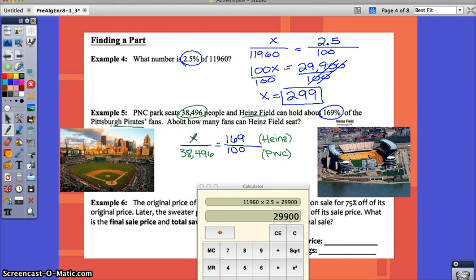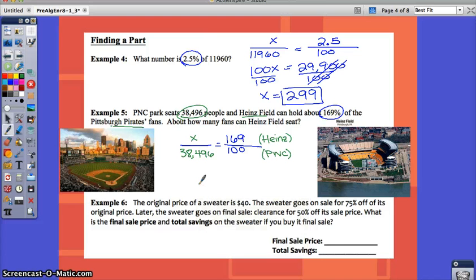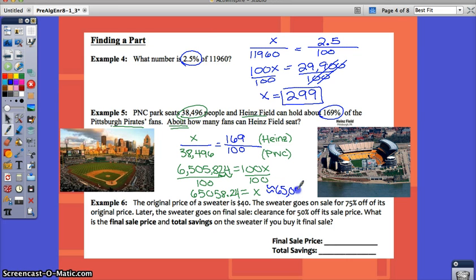Take a second to cross multiply and solve this. I want you to also try example 6. Then you can press play to go over it. Alright, so I hope you've tried this and done the calculations on your own. Right here, when we cross multiply, we get 6,505,824 equals 100x. When you divide by 100, that's the same thing as just moving this decimal over twice. You can type that in your calculator, but you should know that. So, the answer here is going to be 65,058. And it does mean for about how many fans. So, if you wanted to round that number, that would be fine. We can't really have part of a person, right? So, it's about 65,058 fans.